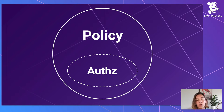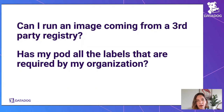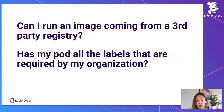To give a couple of examples of things you may want to control on your Kubernetes cluster: can I run a particular image coming from a third-party registry? Or has my pod all the labels required by my organization? Those two things cannot be described with RBAC rules, so we need something else.